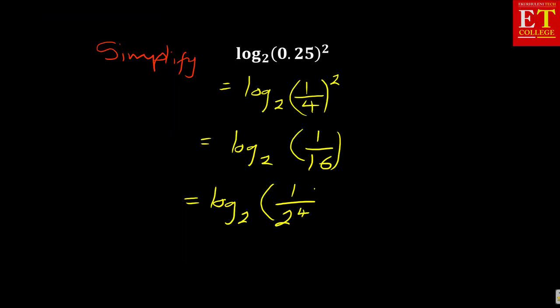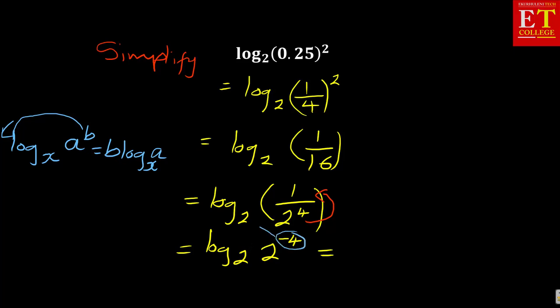So now, because we have written that using the laws of exponents, we can take 2 to the power of 4 to go up and introduce a negative. This then becomes log base 2 of 2 to the power of negative 4. This is same as, using the same law we used previously, you drop the negative 4 before the log. So this is same as minus 4 log base 2 of 2.